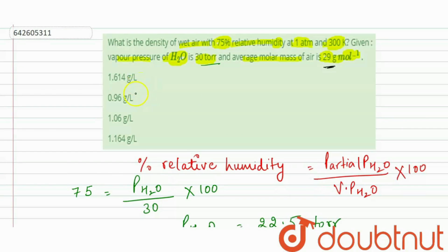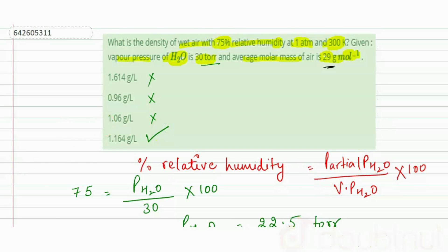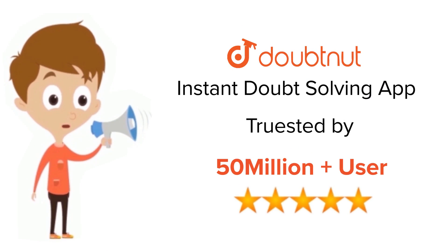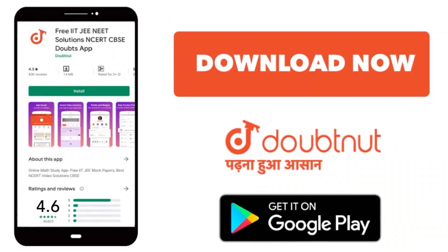This matches our fourth option — that's our correct answer. Thank you. For class 6–12, IIT JEE, and NEET level, trusted by more than 5 crore students — download DoubtNet today.